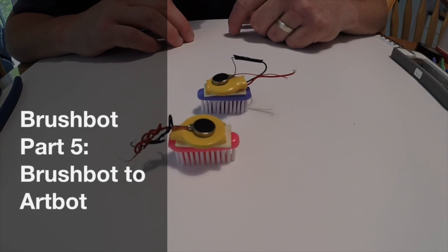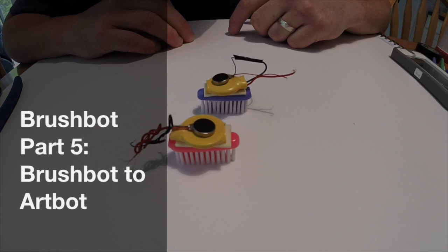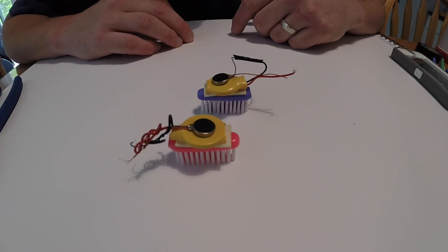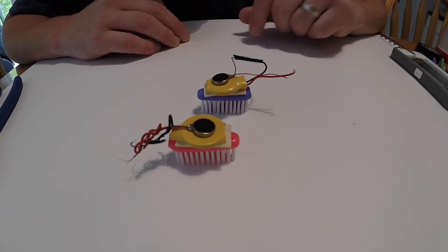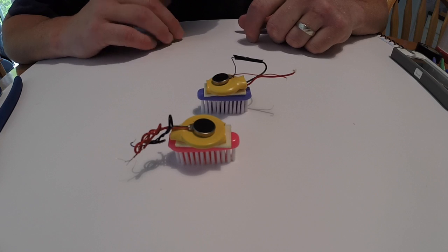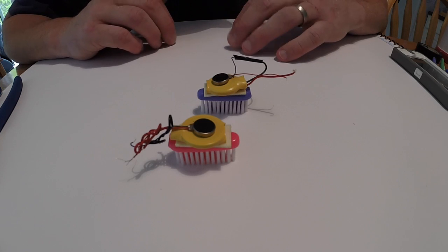Alright, so now the next step. If you're to this video you have demonstrated you're able to make your brush bot go straight in circles or spin. Now this is where the design and really innovative ideas start to come into play.